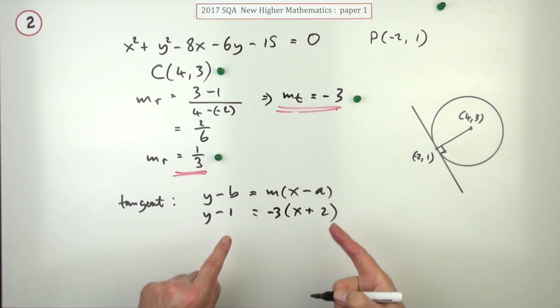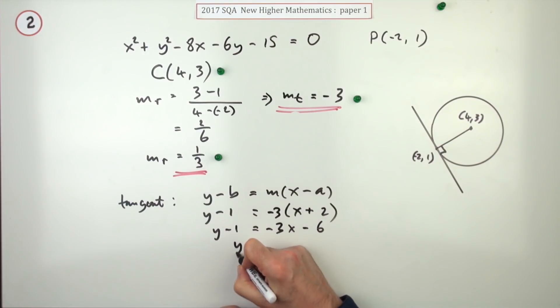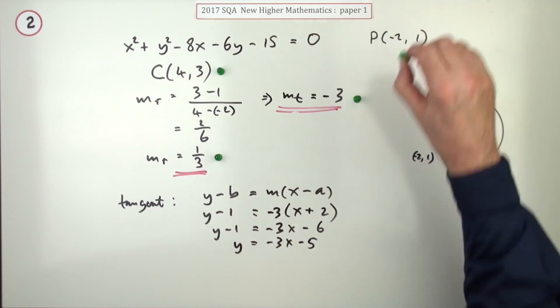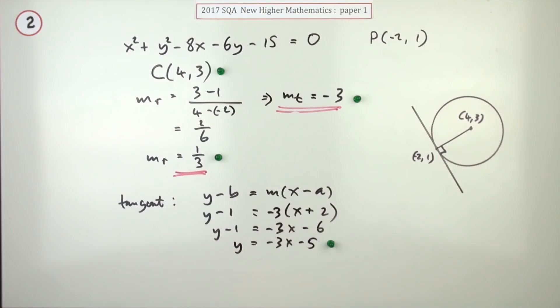There's only one mark left and it's for the final form, where there's only one constant, not two numbers floating about. So you've got y minus 1 is negative 3x and that'll be minus 6. So finally y equals negative 3x, they must get joined together, across this plus 1 minus 5. And that's the final mark, the fourth mark.